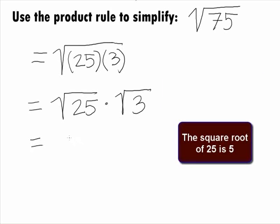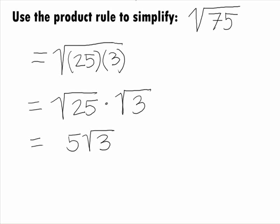Since the square root of 25 is 5, we can simplify this to get our final answer of 5 square root of 3.